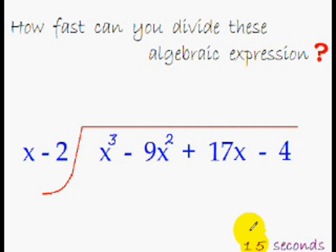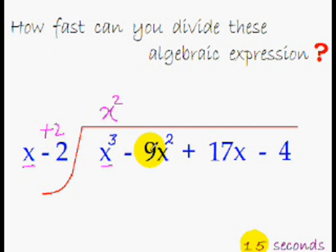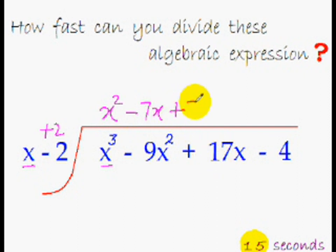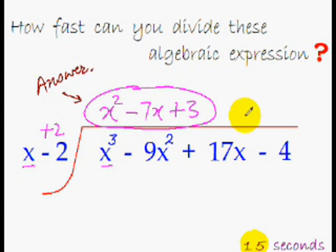Your time is up. So let me do it: x cube divided by x is x square — that is the first term of the answer. Put plus 2 over here; plus 2x square minus 9x square is minus 7x square, so the second term is minus 7x. Then 2 times minus 7x is minus 14x; minus 14x plus 17x is plus 3x, so the third term is plus 3. For the remainder: 2 times 3 is plus 6; plus 6 minus 4 is plus 2, so the remainder is plus 2.